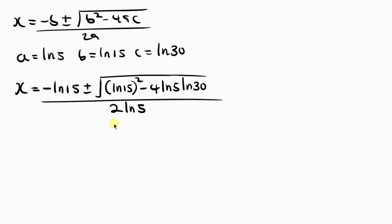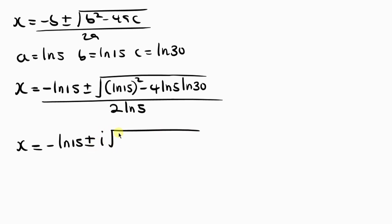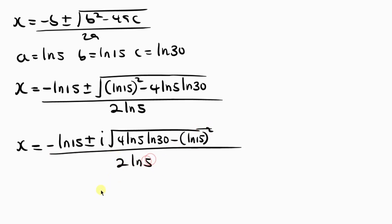Notice that 4·ln 5·ln 30 is larger than ln²15, which means the discriminant is negative — so we get complex solutions. Writing it properly: x = (−ln 15 ± i√(4·ln 5·ln 30 − ln²15)) / (2·ln 5). This is the complete set of other solutions for x.